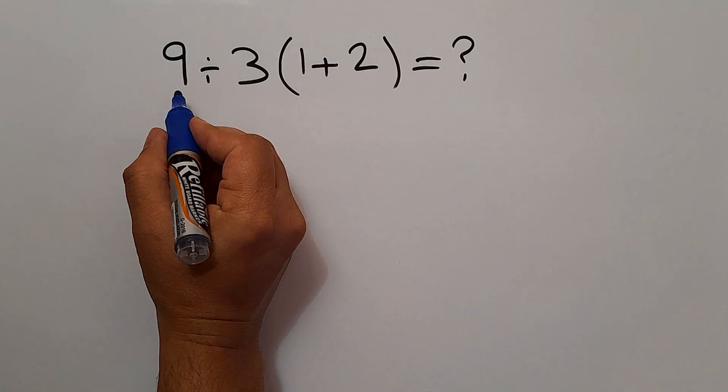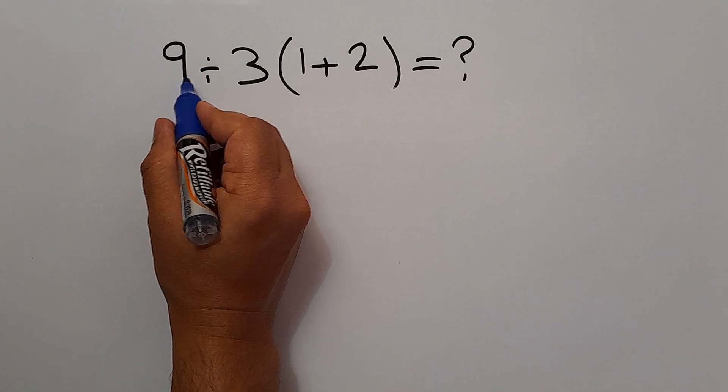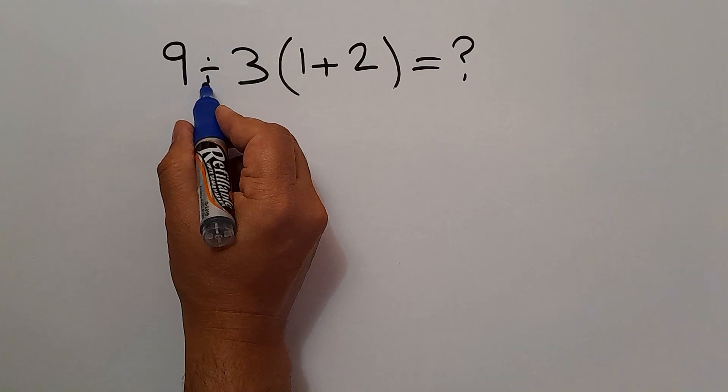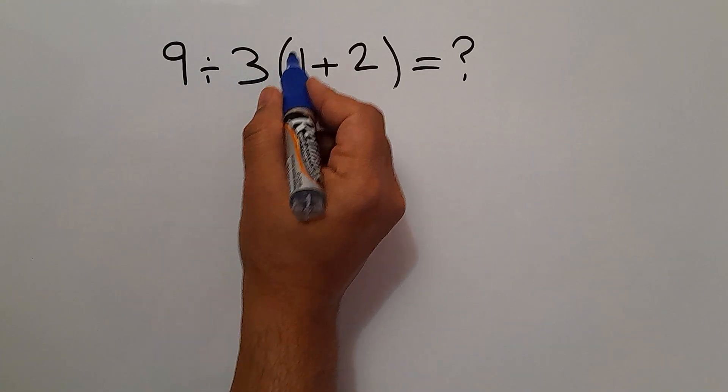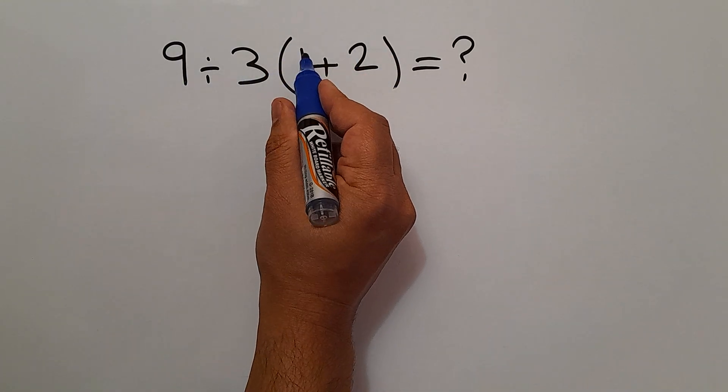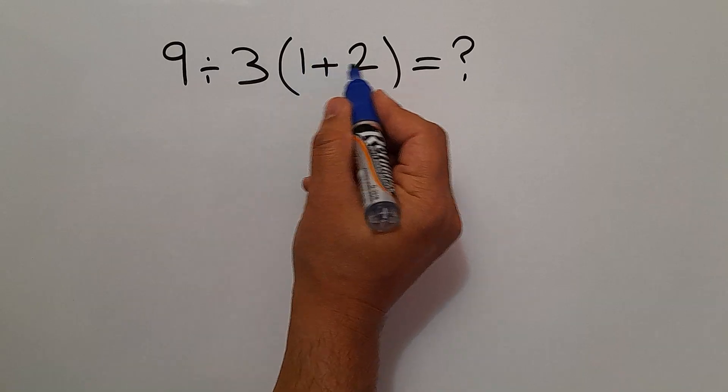Hey guys and welcome to this video. In this video, we want to find the value of this expression: 9 divided by 3 times these parentheses. Inside these parentheses, we have 1 plus 2.